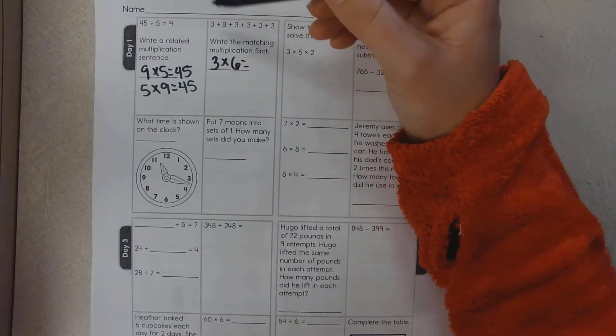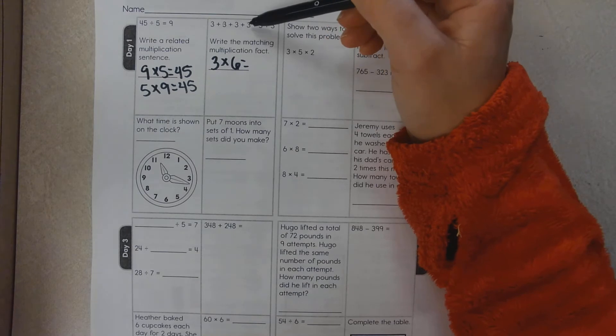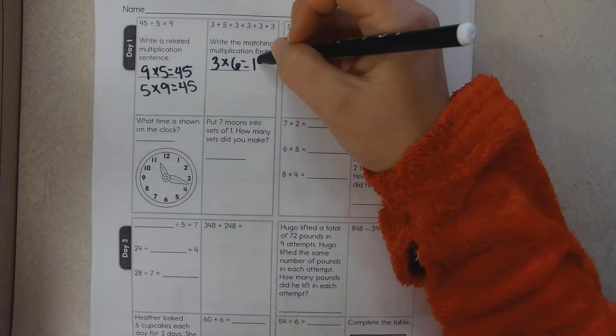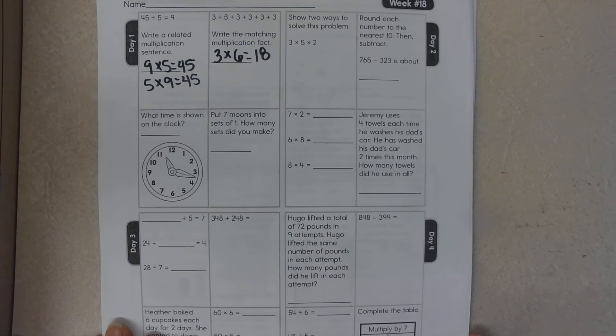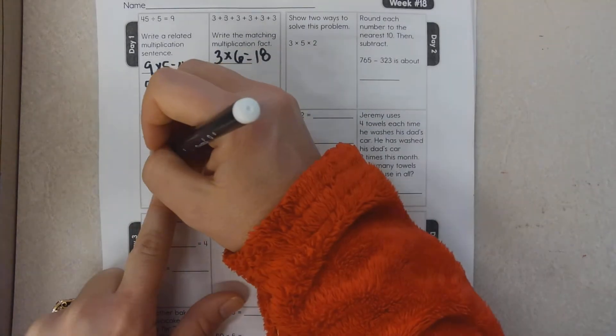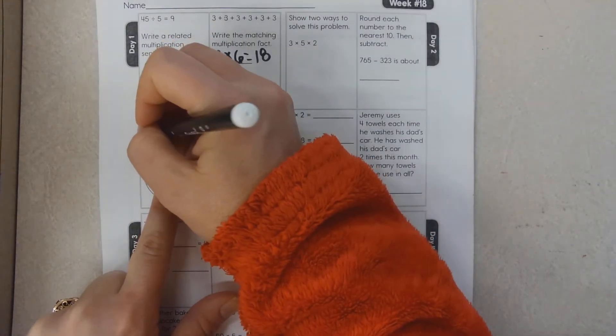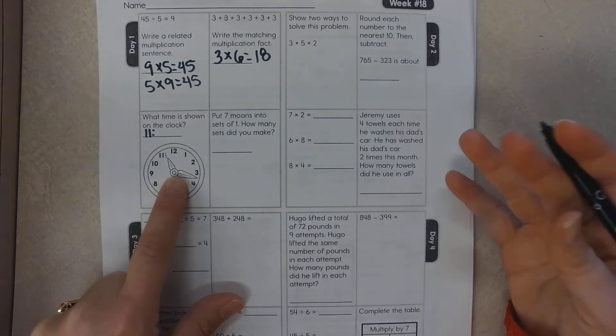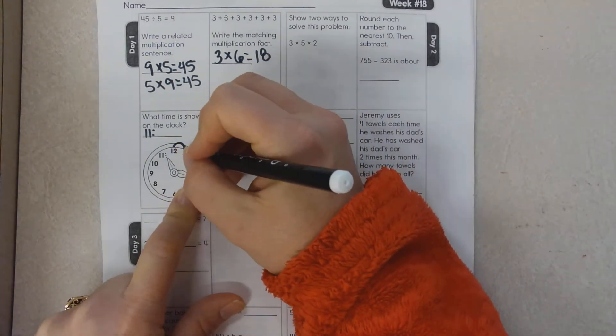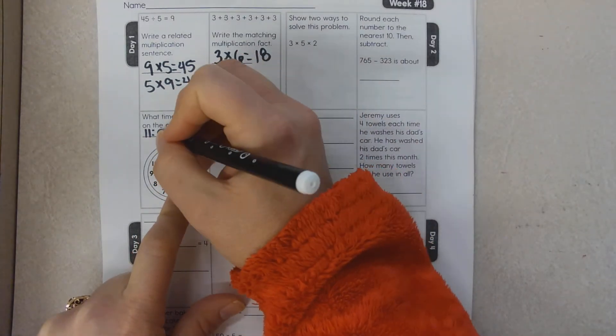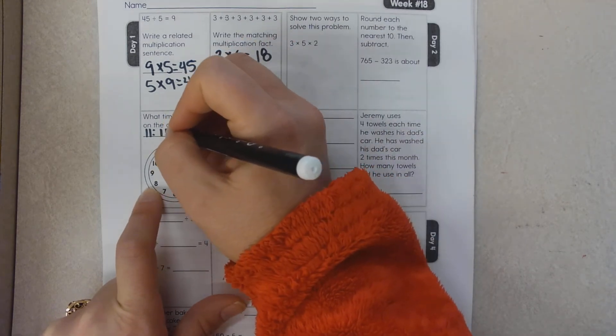What time is shown on this clock? Well, my hour hand is at 11 something and I'm going to count 5, 10, 15. Maybe it's 16 or 17. Let's go ahead and do 16, probably more likely 17.